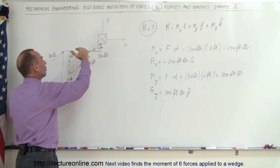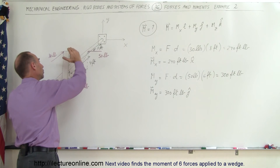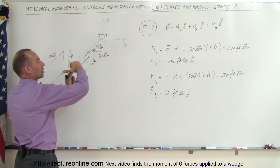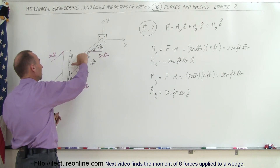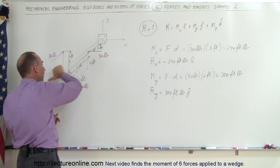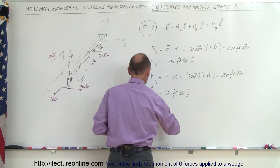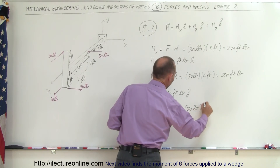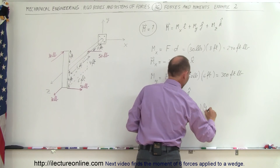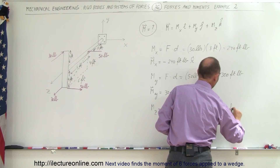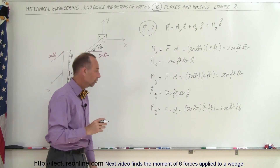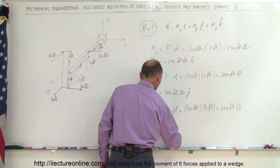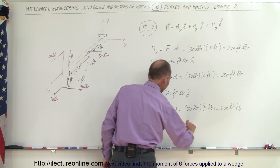Finally, we need to find the component of the moment in the z direction, which depends on the separation distance. This force will cause the whole thing to rotate one way, and this force in the other direction — looking from the front, that rotation is counterclockwise, which is a positive torque, meaning the moment points outward in the positive z direction. So the moment in the z direction equals the 50 pound force times the four-foot vertical distance, giving 200 foot-pounds. The z component of the moment is positive 200 foot-pounds in the z direction.